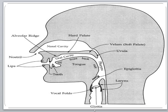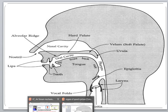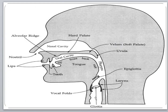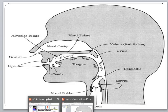When the same air is pushed out by the lungs, it passes through the opening to the pharynx, and we call it glottolic egressive implosives. When the glottis opens, the air will move out of the mouth. When the glottis moves down and opens, the air will get sucked into the mouth. If the lung pushes out, the air will move up; if the lung sucks, the air will get in. These two actions are called implosives. Since it is done by the glottis, it is called glottolic. If the action is out, it is glottolic egressive; if the action is in, it is called glottolic ingressive implosives.